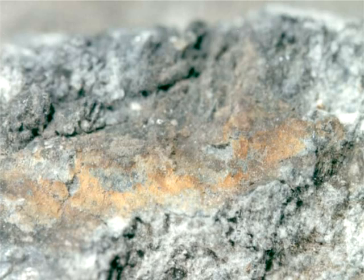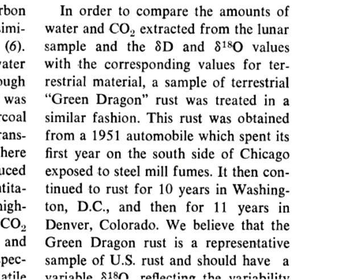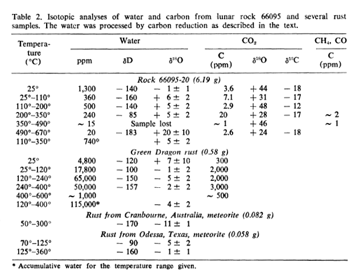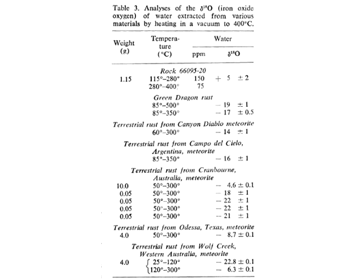As part of their studies, Friedman and company compared the rust of sample 66095 with a sample of rust chipped off from an old rusty automobile — I kid you not — and samples of rust from two iron meteorites, one found in Australia and the other in Texas. They noticed that the values of deuterium were the same between the water from sample 66095 and the water in the terrestrial rust. The oxygen-18 in the latter apparently varies, but in Friedman's observations it was depleted by comparison with water from 66095's rust. This led Friedman to conclude that the rust and water was of lunar origin, not terrestrial contamination.